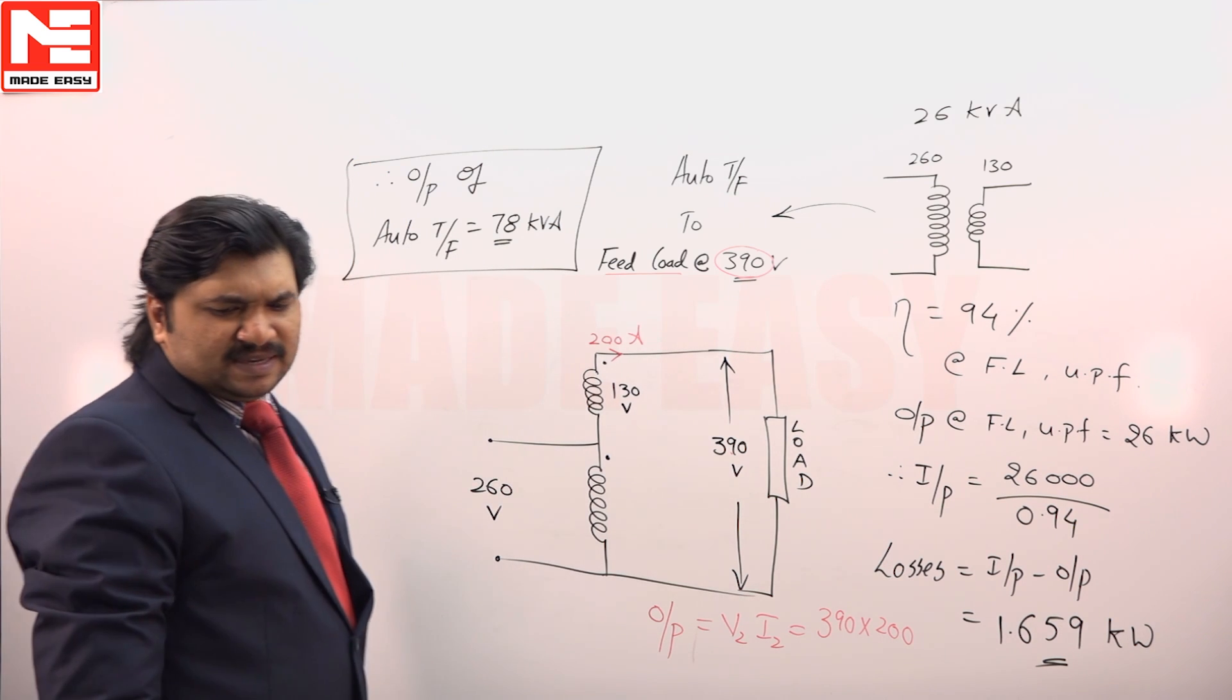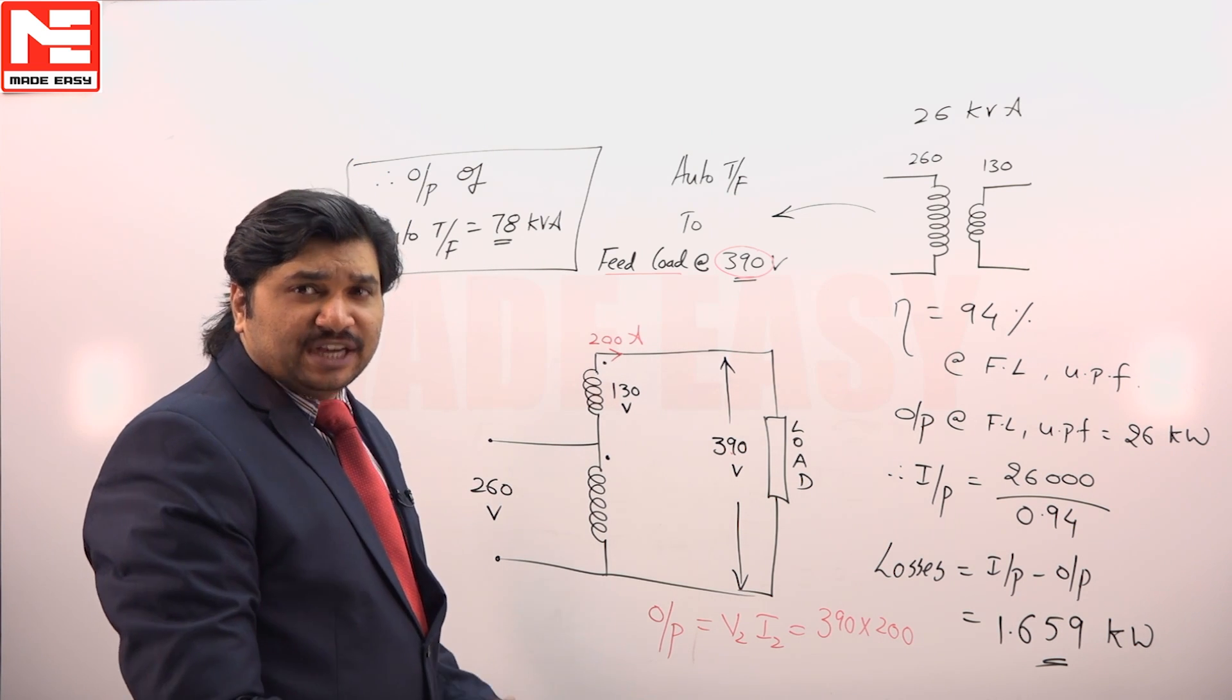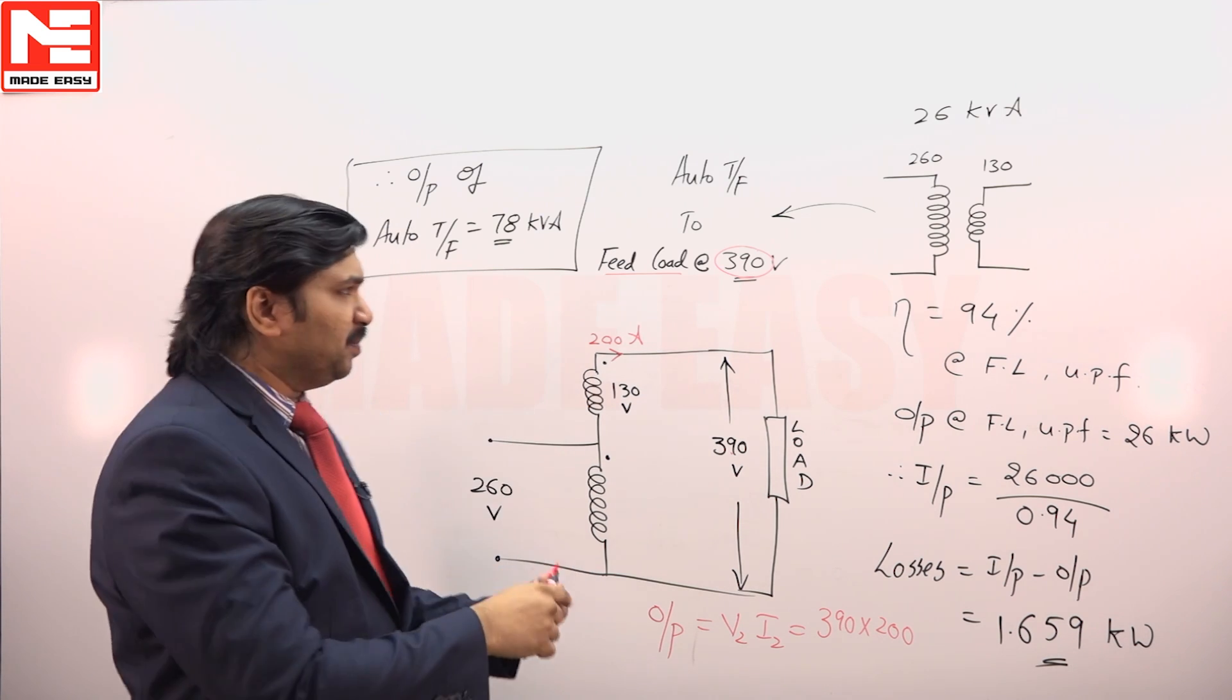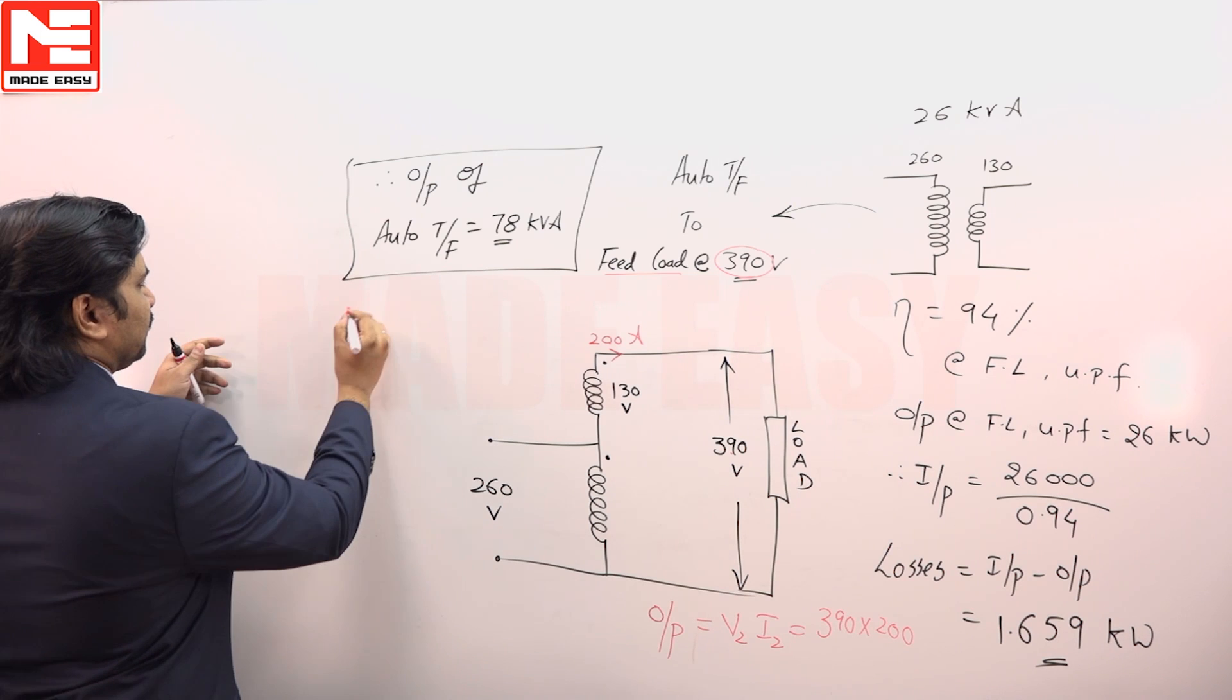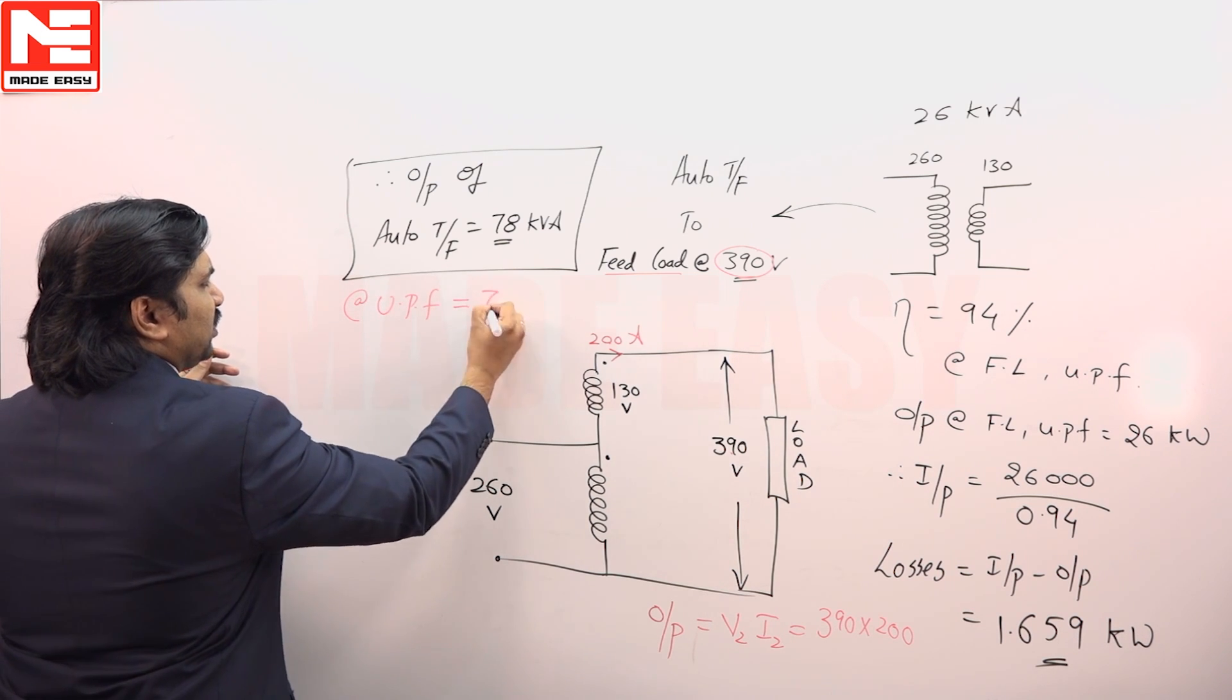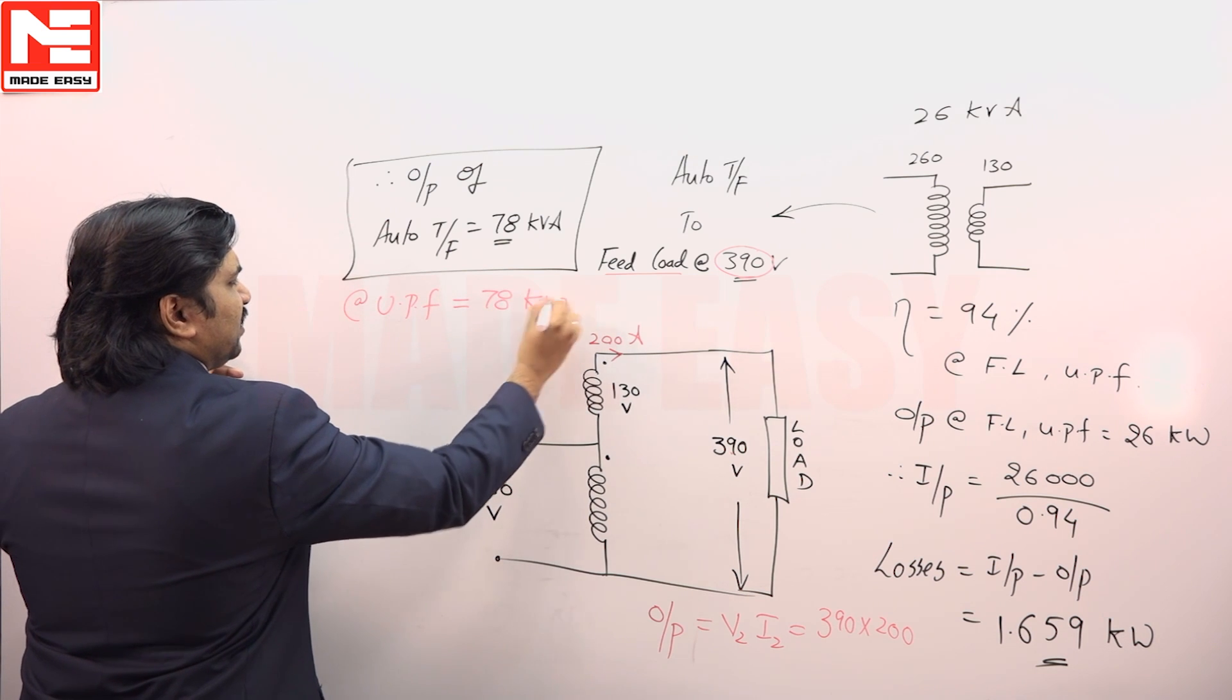What is asked is the full load efficiency at unity power factor. Unity power factor full load means output is 78 kilowatt.